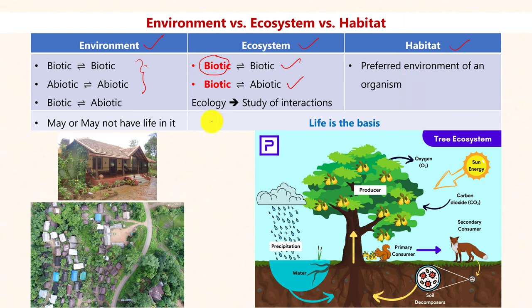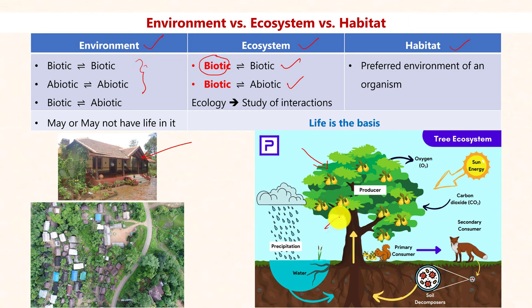For example, for human beings, a house is the preferred habitat. For a bird, a tree is a preferred habitat. For a squirrel, the branches of the tree are the preferred habitat. Coming to the differences between environment, ecosystem, and habitat.